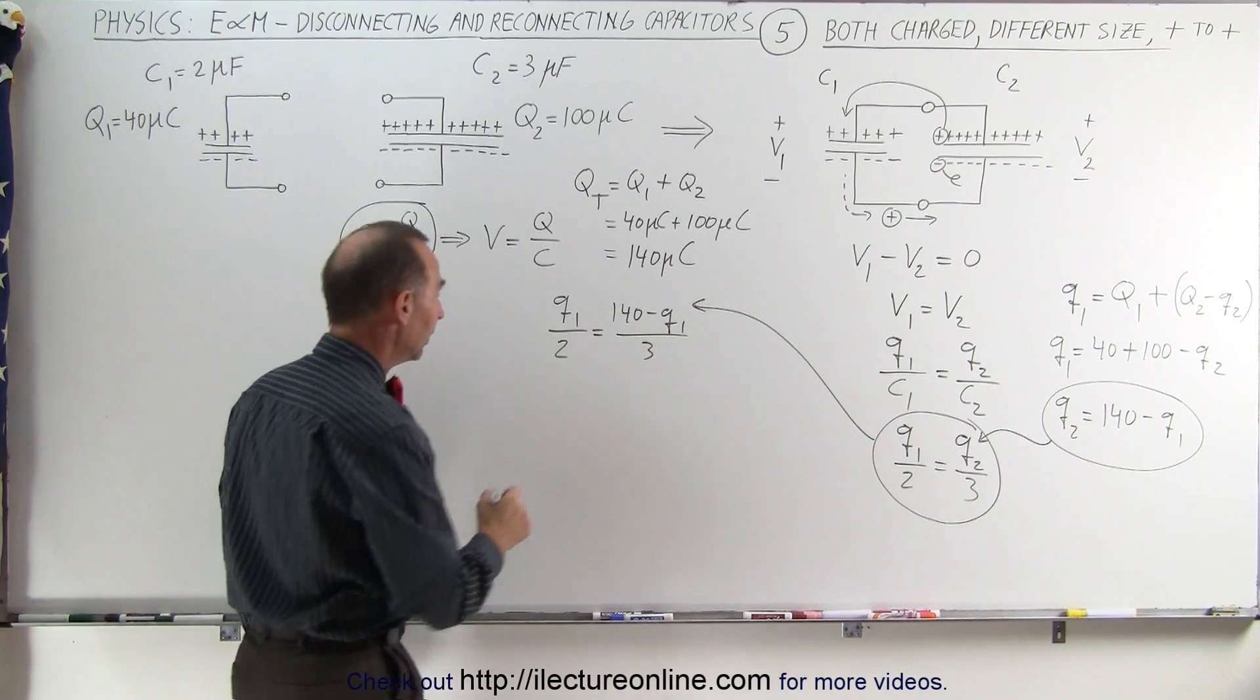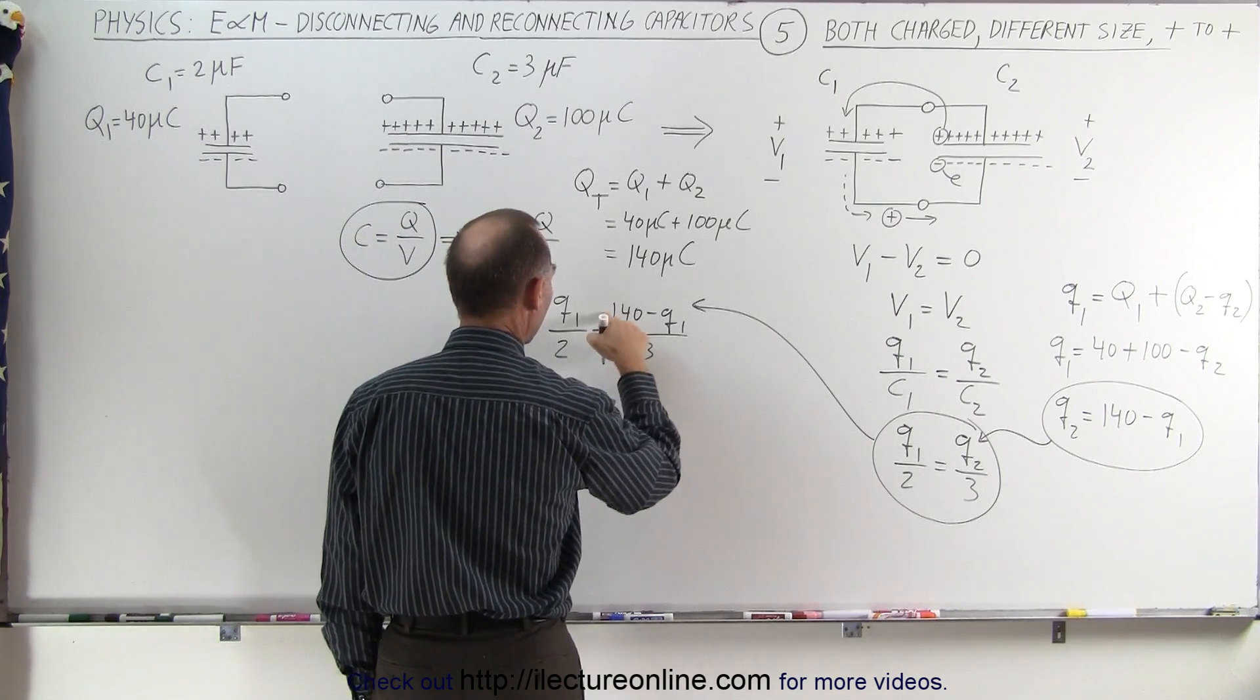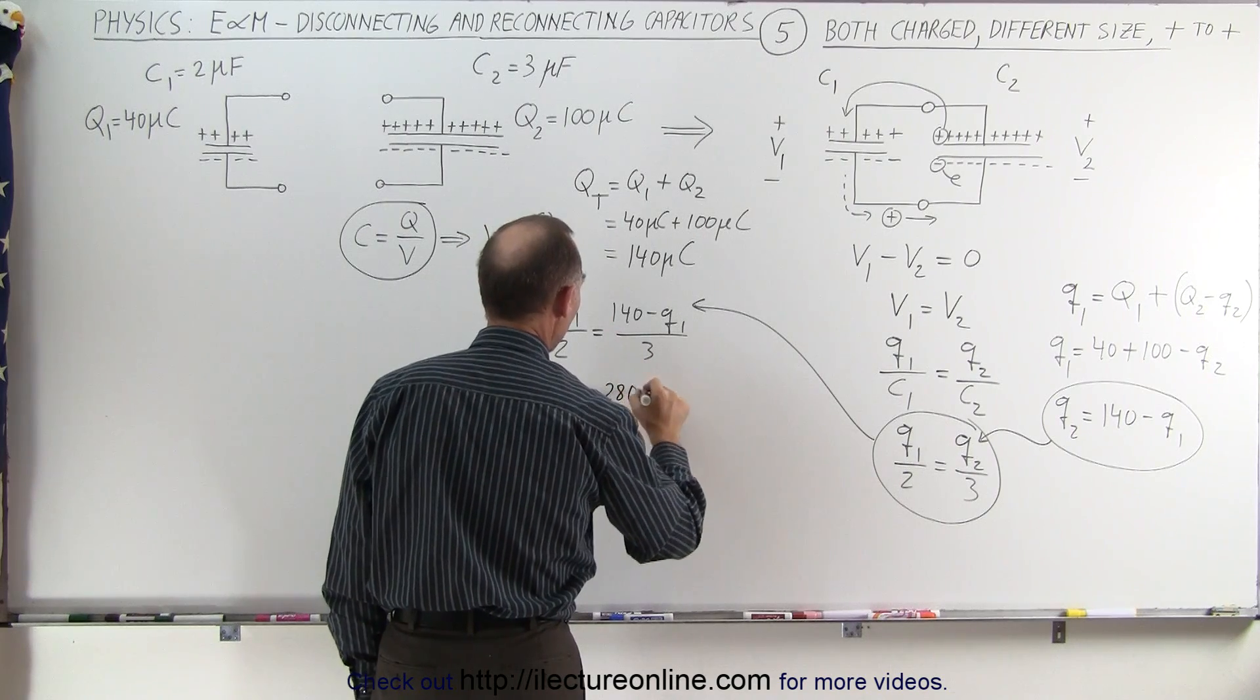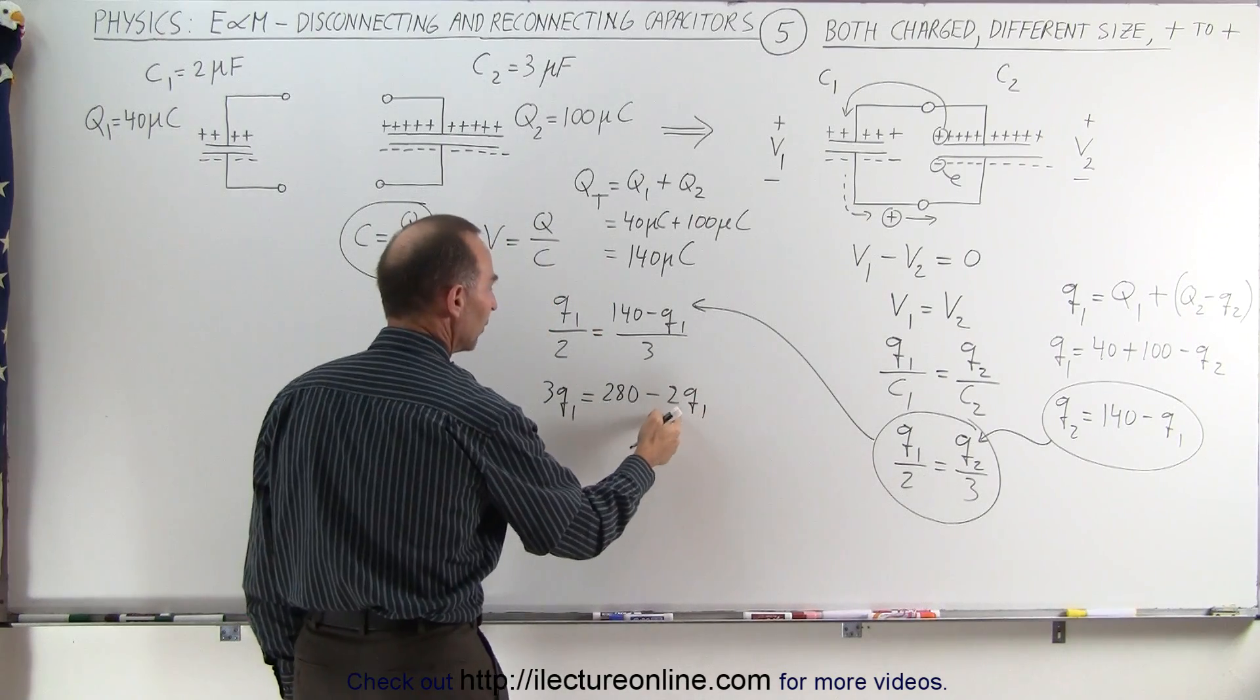Now we just need to cross multiply. So 3q1 is equal to 2 times 140, which is 280, minus 2 times q1, which is 2q1.